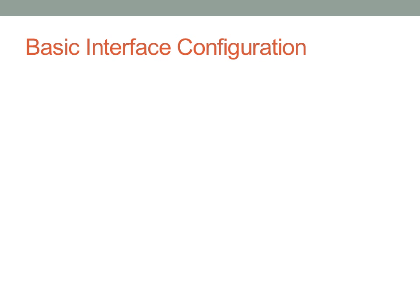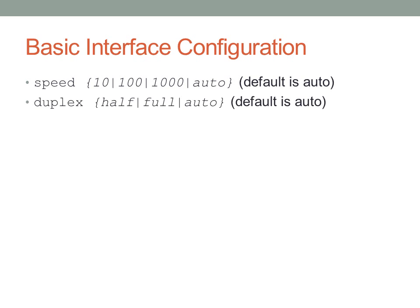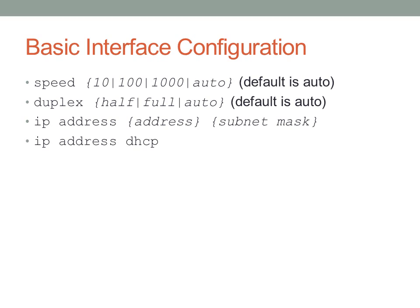The first thing we'll discuss is basic interface configuration. You can configure a speed or duplex — the individual settings are listed there. You can configure an IP address on an interface; normally on switches this is done on a VLAN. You can also configure the switch to get its IP address from a DHCP server with the command 'ip address dhcp'. You can specify a default gateway on the switch, which is where the switch will send traffic destined to an unknown IP address for a LAN that it doesn't know about.